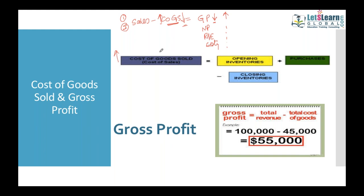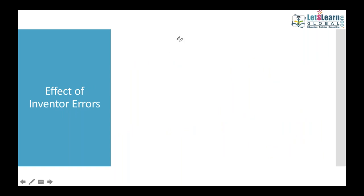Cost of goods sold is derived from the formula, so its value depends on the valuation of opening and closing inventory. If any error takes place in opening inventory or closing inventory, that will impact cost of goods sold, and consequently profits. These are called inventory errors, and their impact will be on the income statement, retained earnings statement, and the statement of financial position.